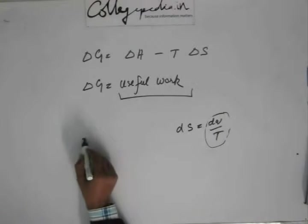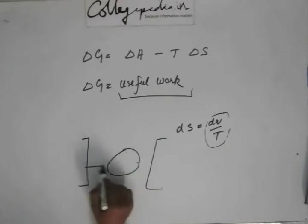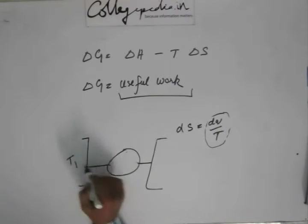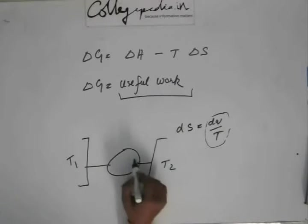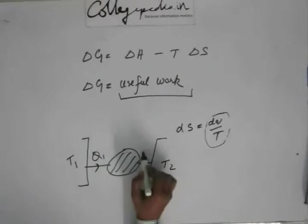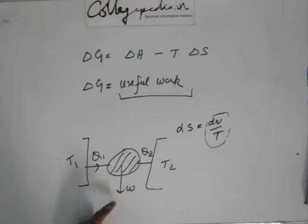If you remember the Carnot cycle that we study was like this. Now a fuel, this is at T1 suppose, this is at T2 suppose, and this is your engine. So heat is coming out; this Q1 is coming out, this Q2 is going out, and you have a work W.